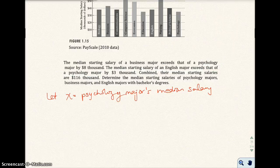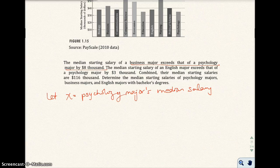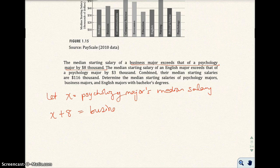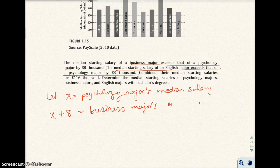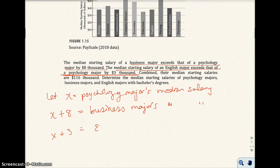Let's go ahead and see. It says the business major exceeds the psychology major by $8,000. So if we have x plus 8, that would be the business major's median salary. The median starting salary of an English major exceeds that of a psychology major by $3,000. So x plus 3 equals the English major's median salary.